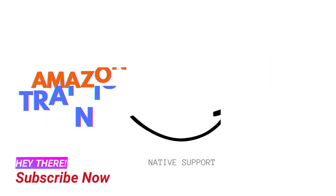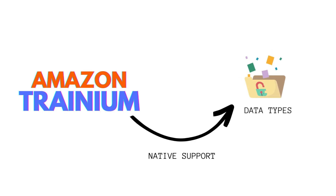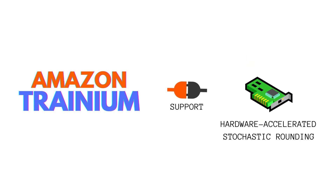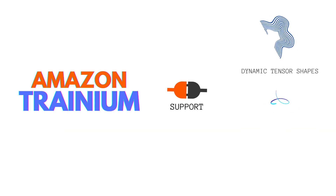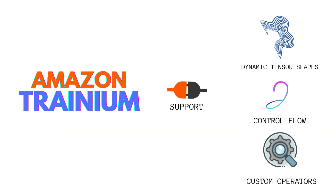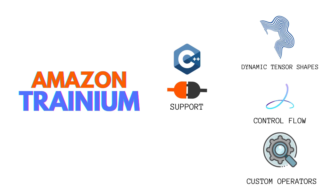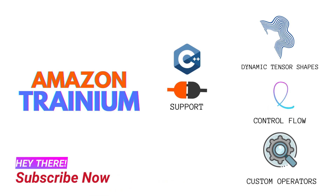Another key advantage of AWS Terranium is its optimization for state of the art models. Terranium has native support for a wide range of data types, including FP32 and TF32 and many more. It supports hardware accelerated stochastic rounding that delivers higher performance and accuracy than legacy rounding models. Terranium also provides full stack support for dynamic tensor shape control flows and custom operators written in C++ to deliver flexible, future proof infrastructure for your training needs.